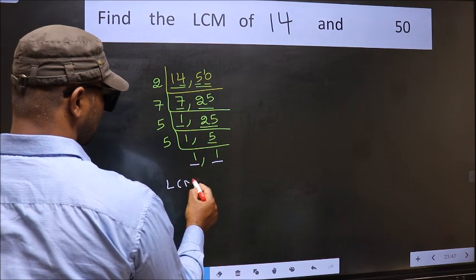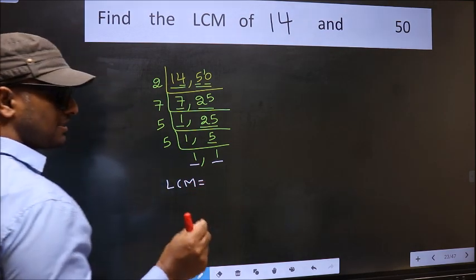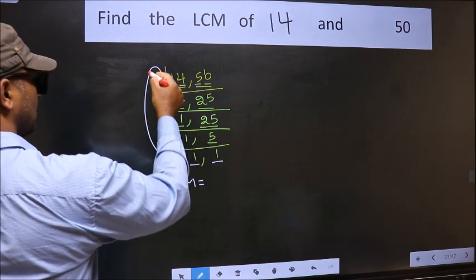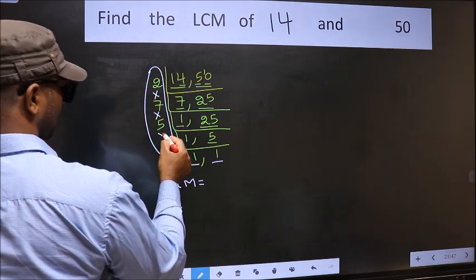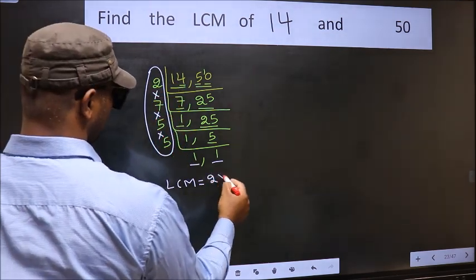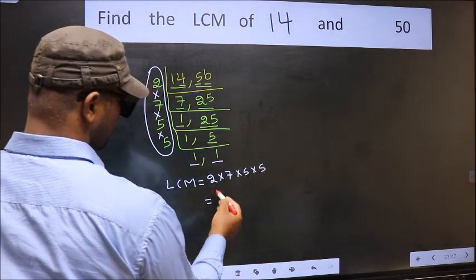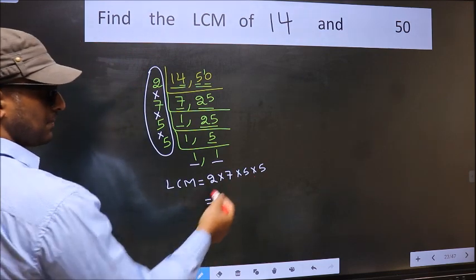So, our LCM is the product of these numbers. That is 2 into 7 into 5 into 5 into 5. So, let us multiply these numbers.